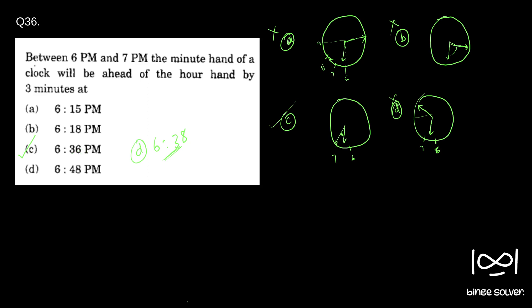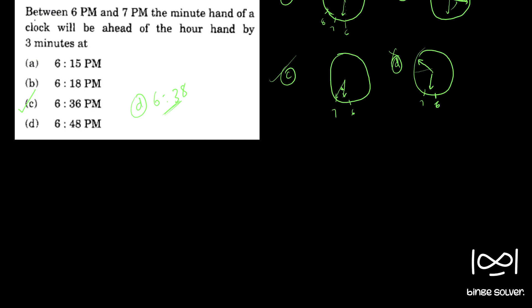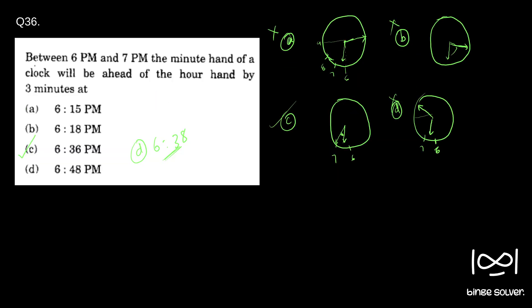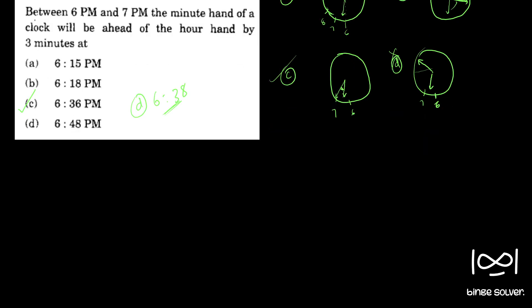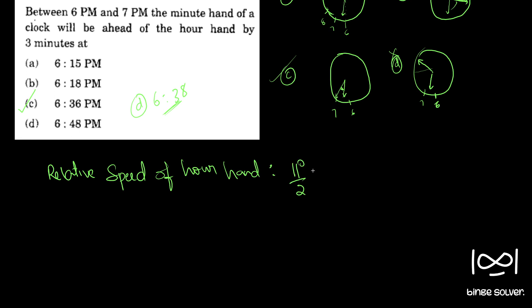For that we can use the relative speed concept. I have discussed the concept of relative speed in detail in a previous video — you can check that out. The relative speed of the hour hand compared to the minute hand is 11/2 degrees per minute.